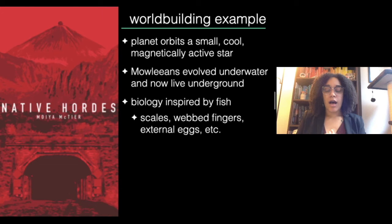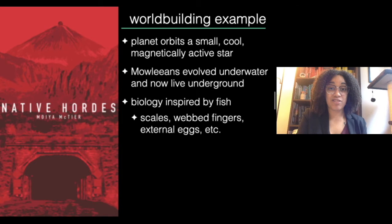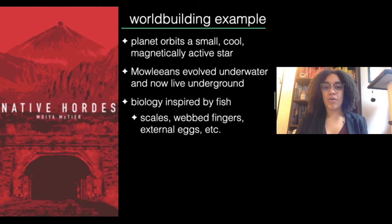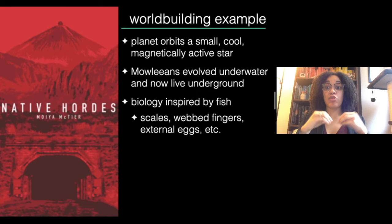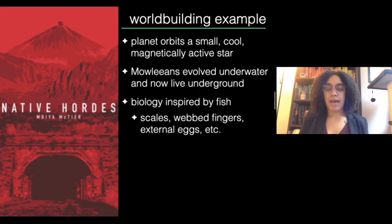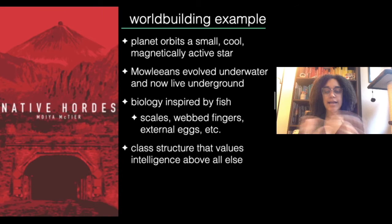What else did I think about the Mallians? I imagined what their biology might be like. Because they spent so much of their evolutionary history underwater, I figured they would probably be very fish-like — they had scales, webs between their fingers, and instead of carrying babies in wombs, they would lay eggs externally that would be fertilized, very similar to how fish or many marine creatures do. I did a lot of research into marine biology, then mashed it together in a way that was realistic but also interesting and served the progression of my story.